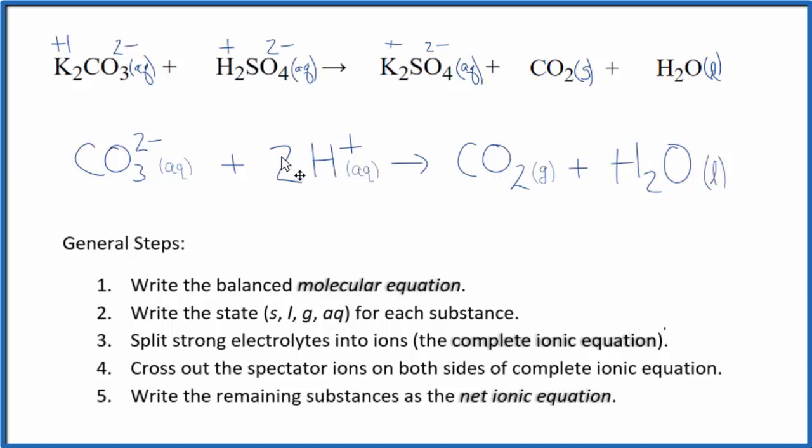And if you count the atoms up, each type of atom, they'll be the same on both sides. So mass is conserved as well. This is Dr. B with the balanced net ionic equation for K2CO3 plus H2SO4. Thanks for watching.